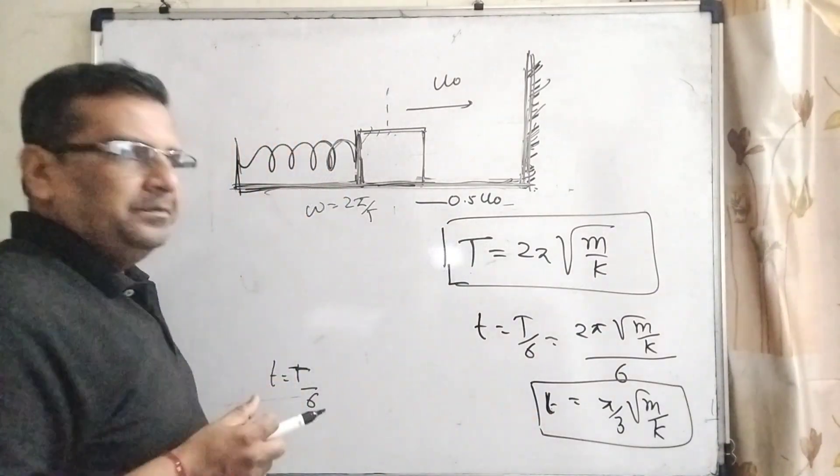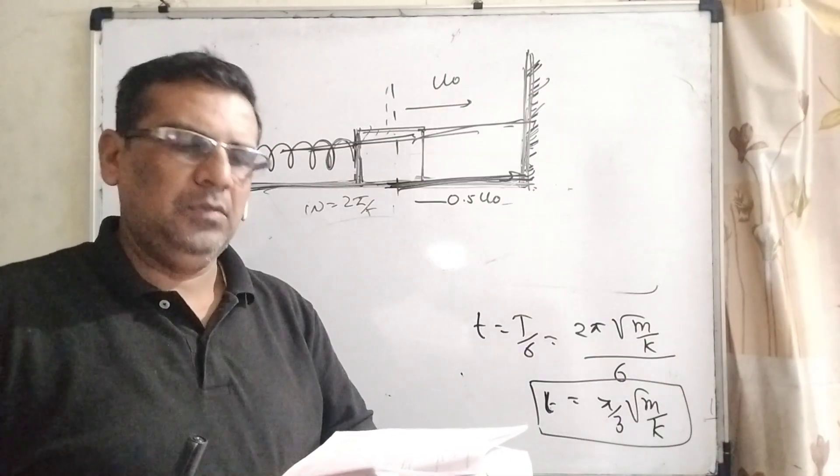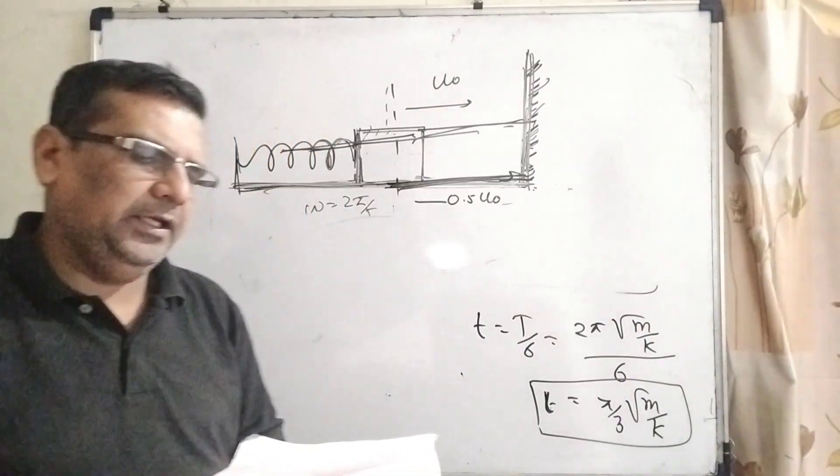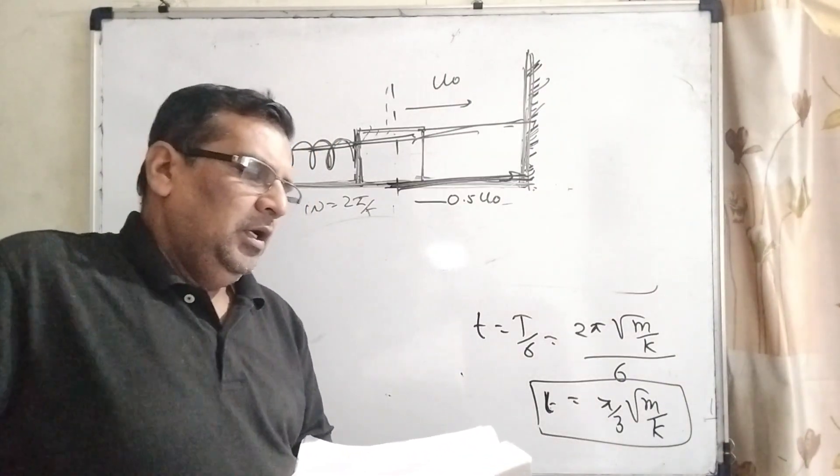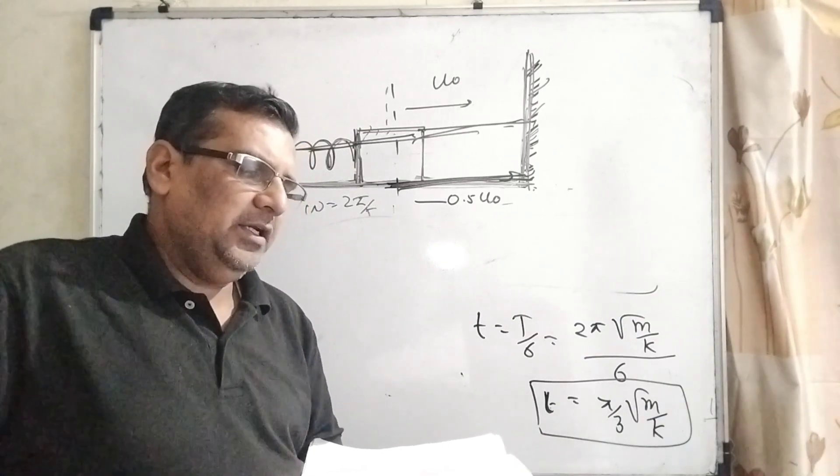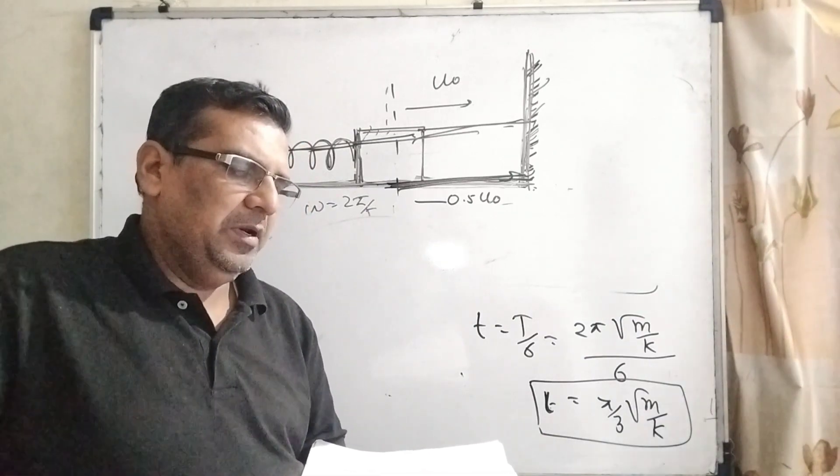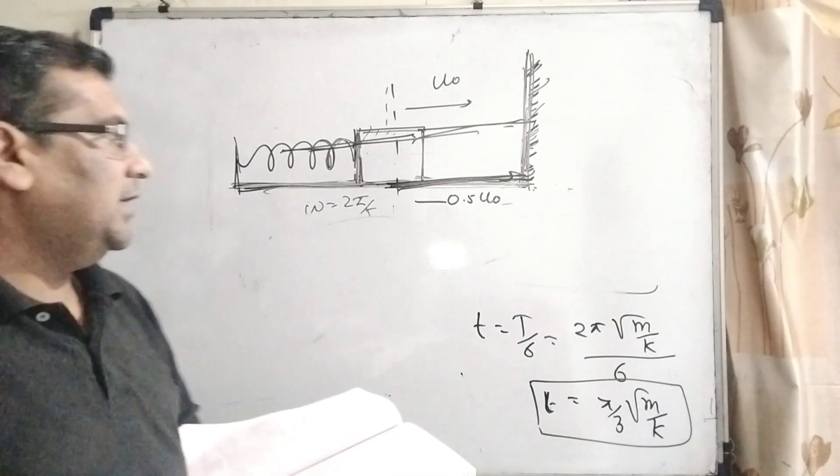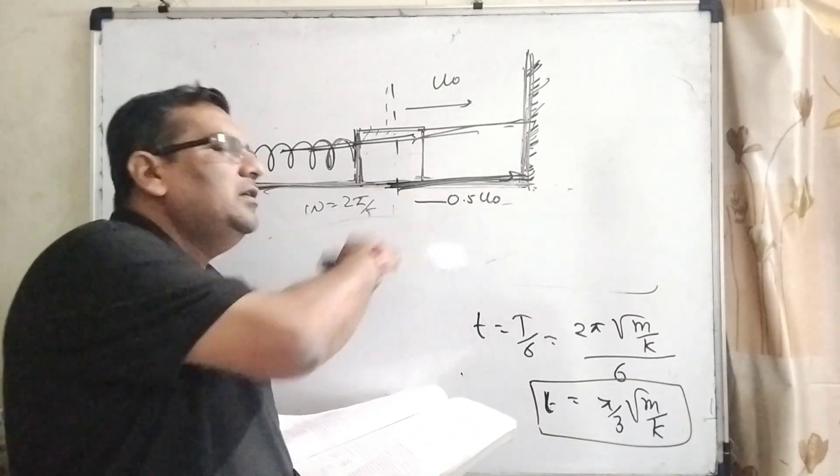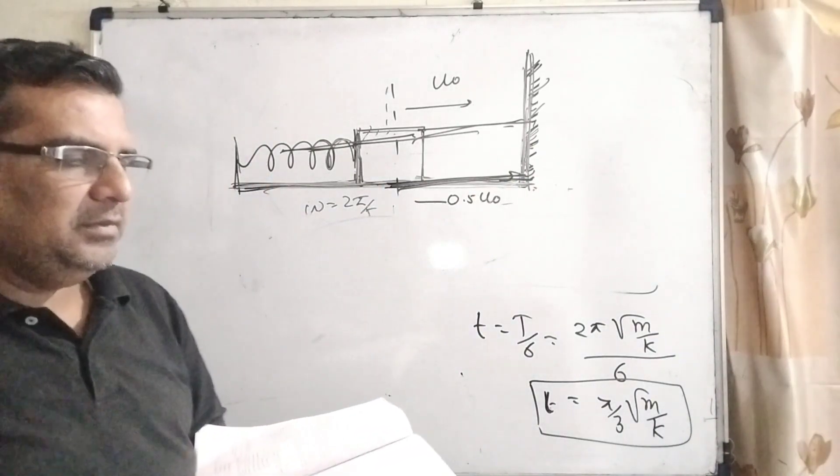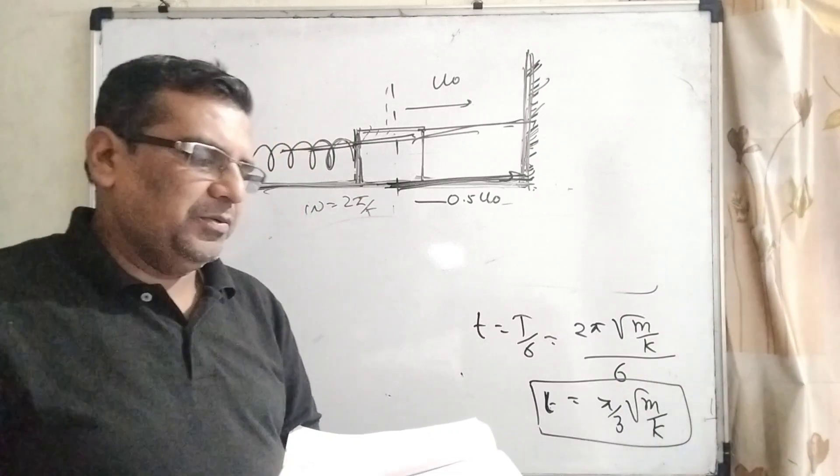Now let's see the question. The speed of the particle when it returns to its equilibrium position is u0. Yes, it is correct because 0.5 u0 strikes and comes back, then 0.5 becomes u0. The first option is correct.